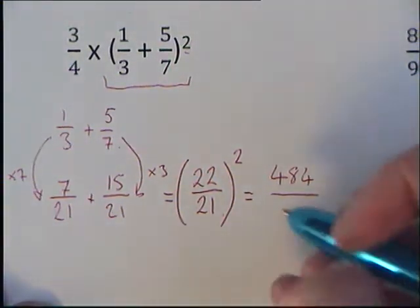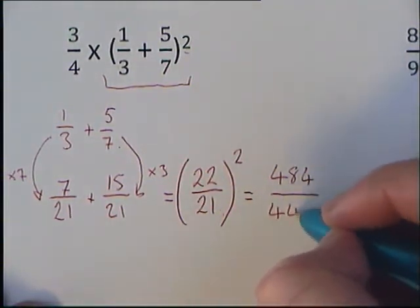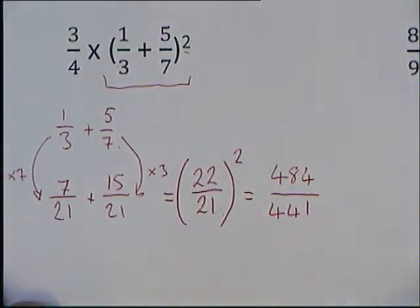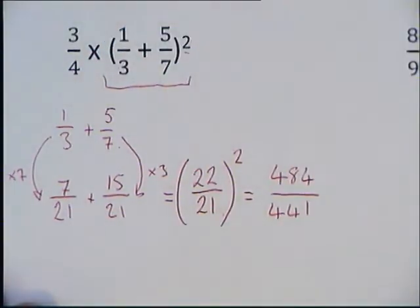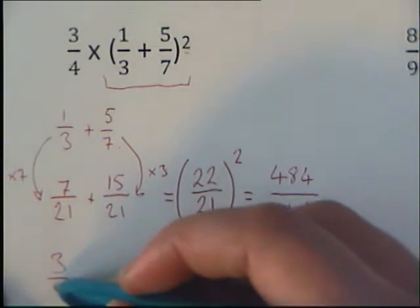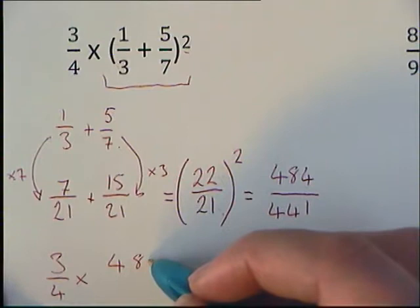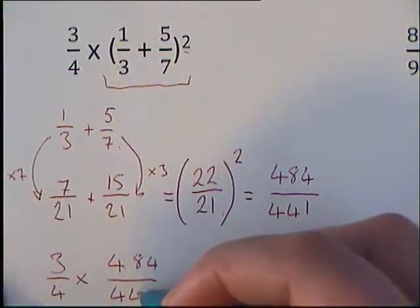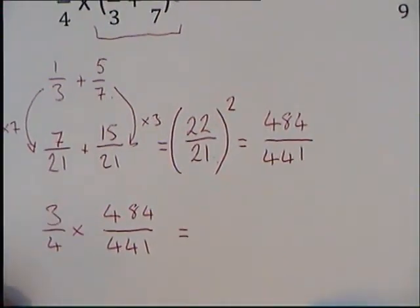Then we have to deal with our fraction which was right at the beginning of our question, 3/4. So we've got 3/4 multiplied by 484/441. Same as all our other multiplication of fractions, we're going to times the top numbers and times the bottom numbers.